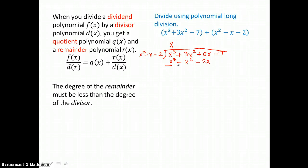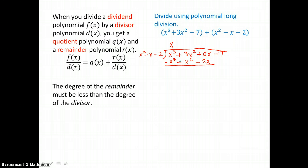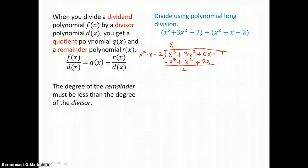Now we're ready to subtract in long division, but in algebra we don't subtract — we add the opposite. So I'm going to change the signs and add. x cubed and negative x cubed give 0. 3x squared plus 1x squared is 4x squared. And 0x plus 2x is 2x. Negative 7 plus 0 is negative 7.